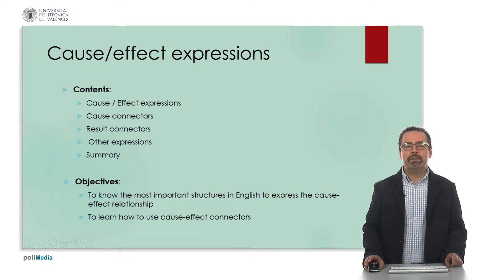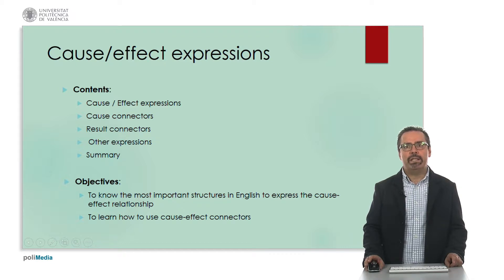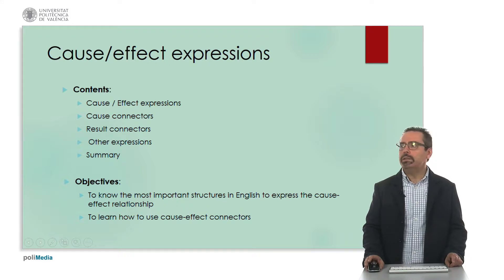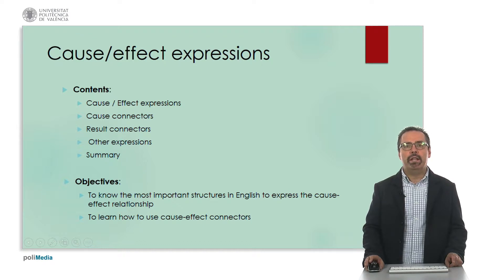The objectives of the learning object are to know the most important structures and grammatical constructions in English to express this very important relationship between the cause and the effect or result. And also to learn how to use correctly, in proper English, the cause and effect connectors.